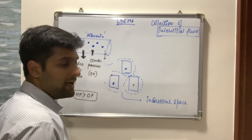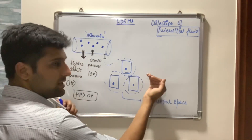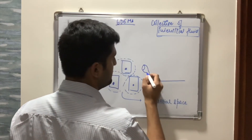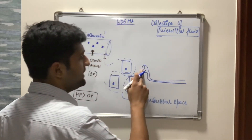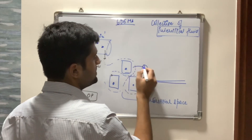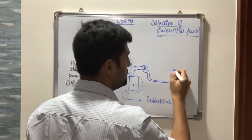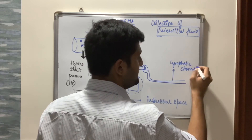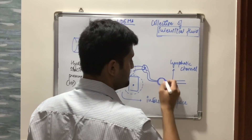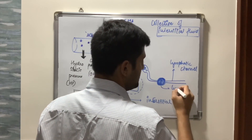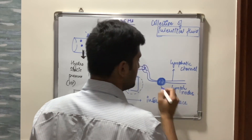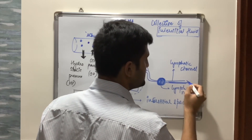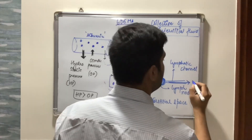But if interstitial fluid keeps forming and is not drained, it will accumulate. To drain it, there is a drain connected to a channel — this drain is the lymphatic system. The fluid drains into this and passes through what is known as the lymphatic channel. The lymphatic channel has collections of tissue at places known as lymph nodes. The interstitial fluid drained into the lymphatic channels is known as lymph.